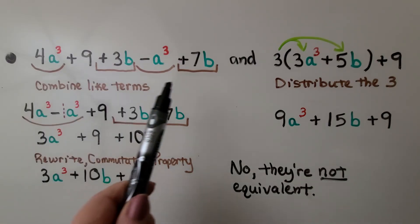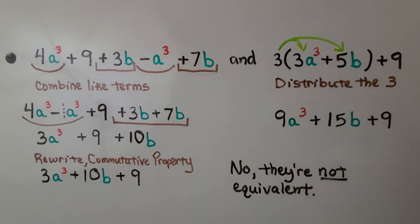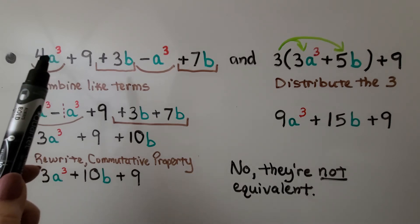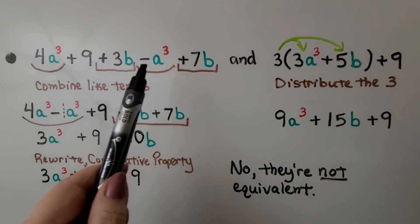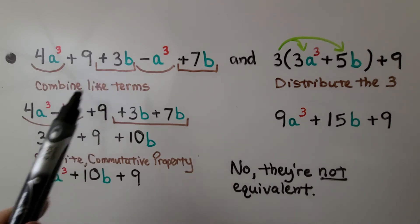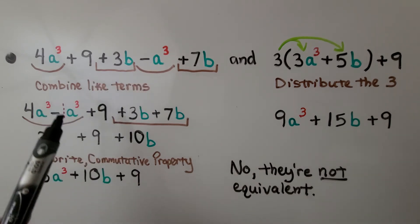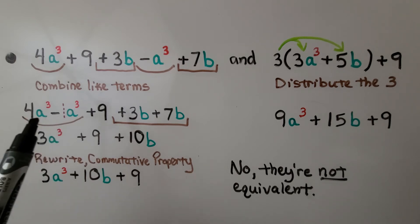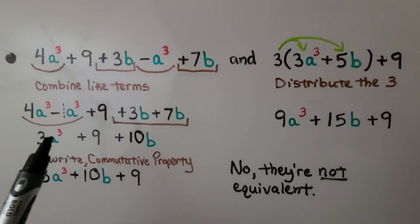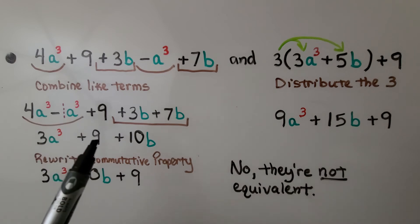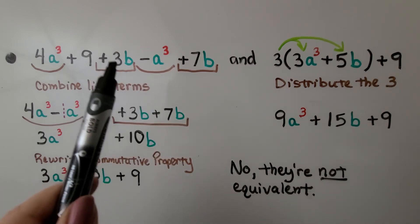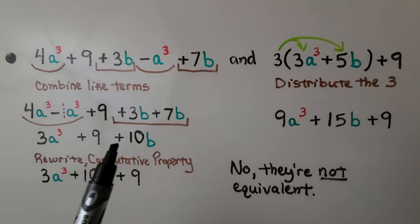Here we have a very long expression, and then we have an expression with the distributive property. We start combining like terms in the first one. We have 4a raised to the third power and minus a raised to the third power. Remember, the sign goes with the term — there's an invisible 1 in front of that a. So we have 4a³ minus 1a³, which gives us 3a³. We have plus 9, then plus 3b plus 7b, and we combine those two like terms to get plus 10b.